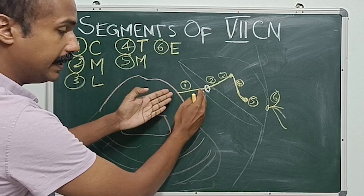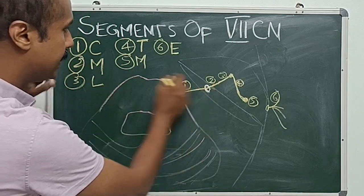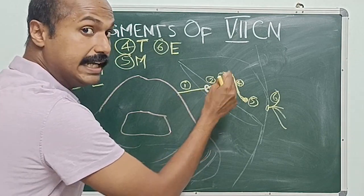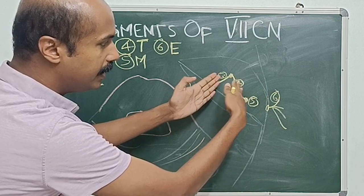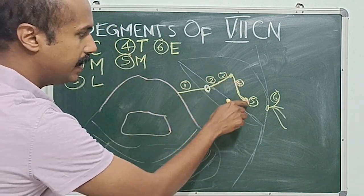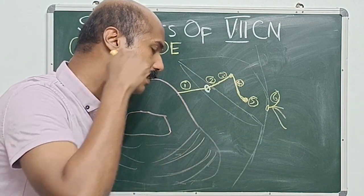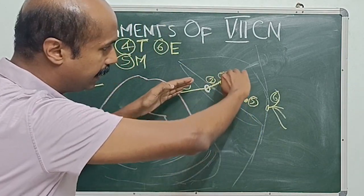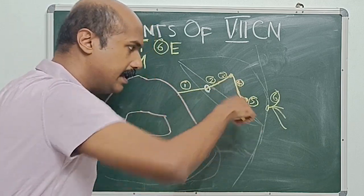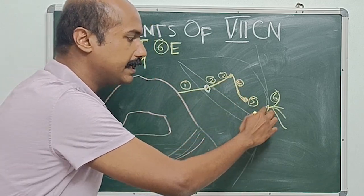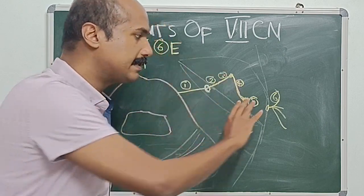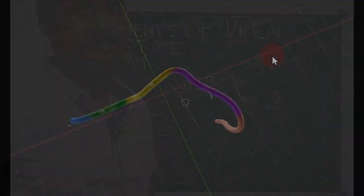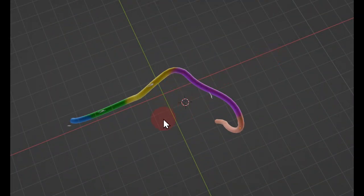So these are the six segments of the facial nerve: first is the cisternal segment (intracranial), second is the meatal segment within the internal acoustic meatus, third is the labyrinthine segment over the inner ear, fourth is the tympanic segment on the medial wall of the middle ear, fifth is the mastoid or vertical segment. The nerve follows an S-shaped three-dimensional path — going posteriorly then downwards — before exiting from the stylomastoid foramen as the extracranial segment.